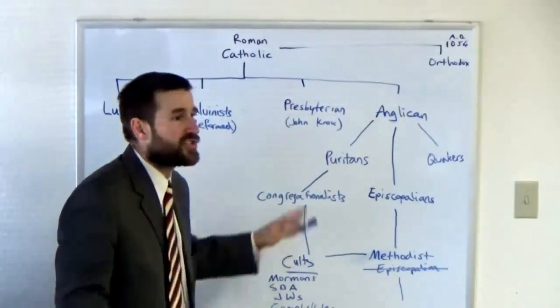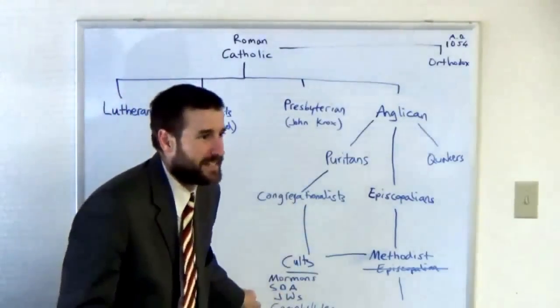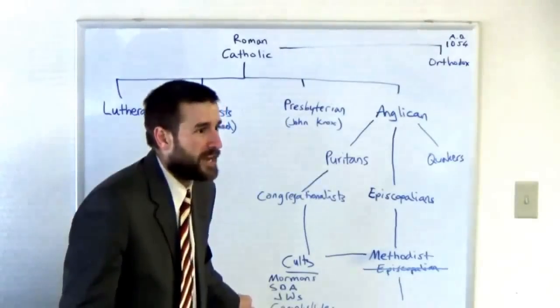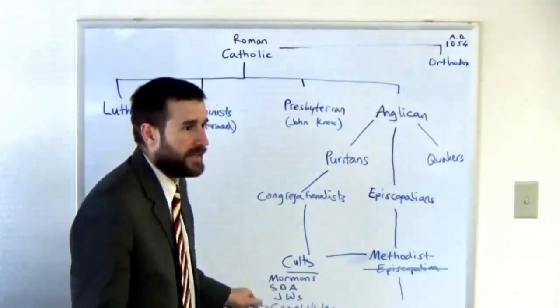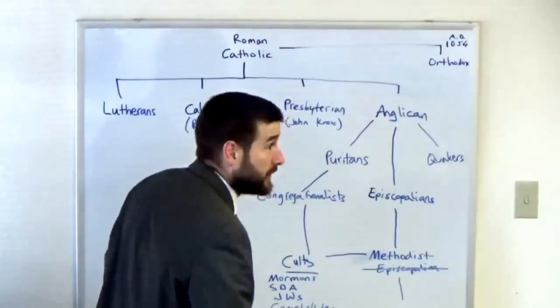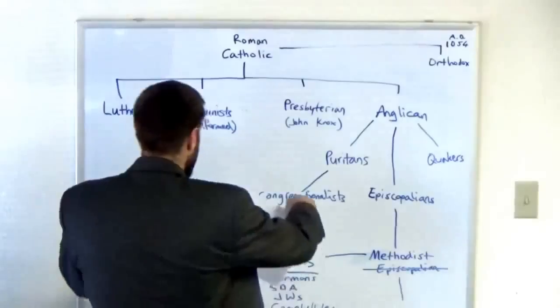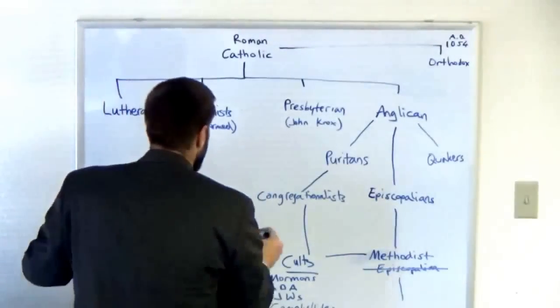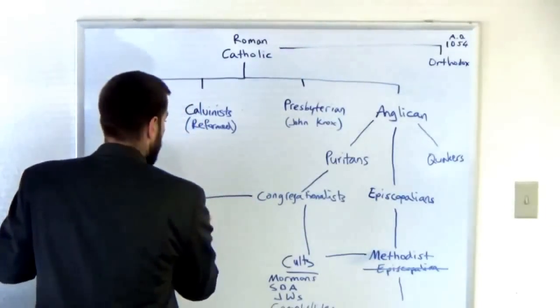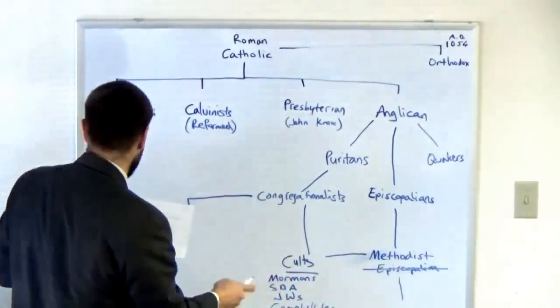That's these people, all your cults. And the Campbellites today are known as Church of Christ. That's your duck dynasty hero, that long-haired hippie that you idolize. He believes that you have to be baptized to be saved. He's a follower of this Campbell cult leader from the 1800s.